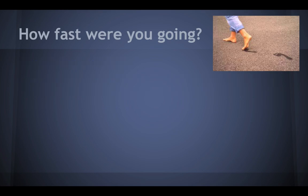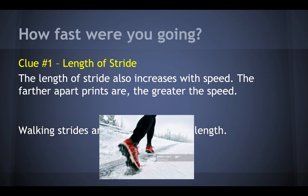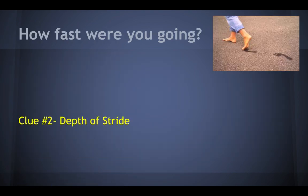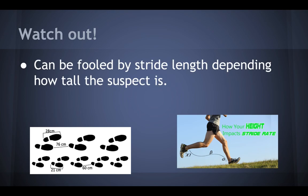Clue one was length of the stride. Usually that's the case, however we do have to be careful because you can be fooled — the stride length depends on how tall the subject is. Height impacts the stride rate. Someone who has super long legs is usually an excellent runner because each of their strides covers so much more ground as they're running.